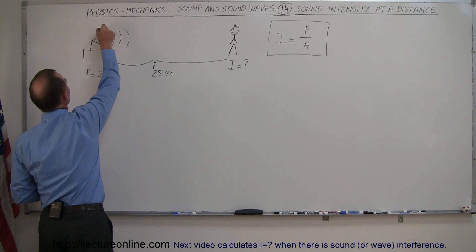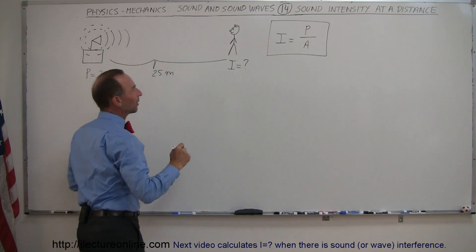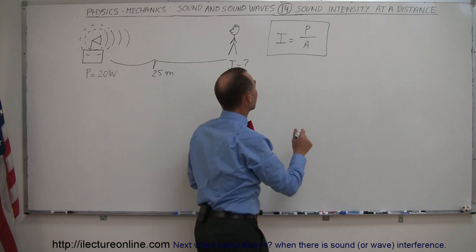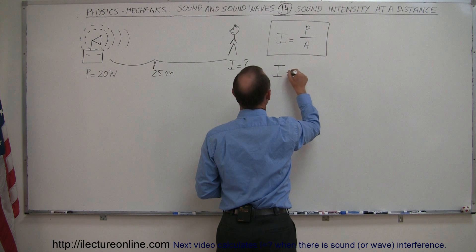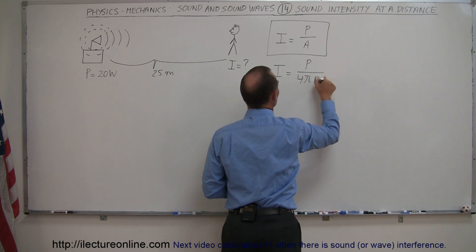And remember, the area over which the sound spreads is a spherical area, and so we know that the area is 4πr², so we can then say that the intensity is equal to the power of the source divided by 4πr².